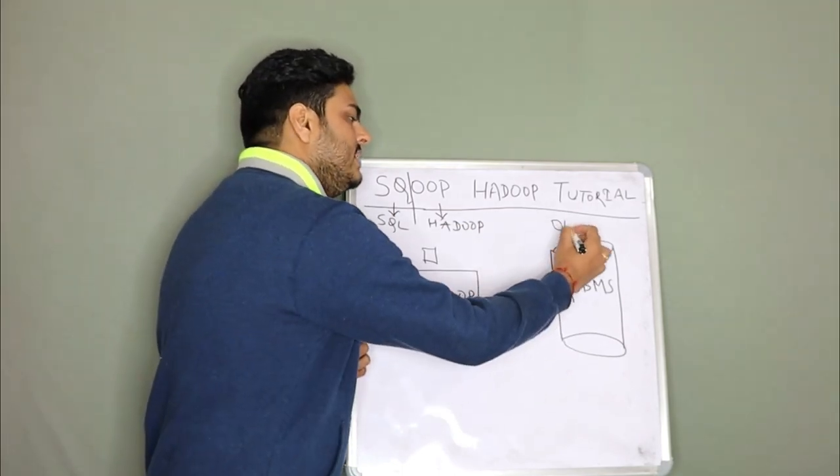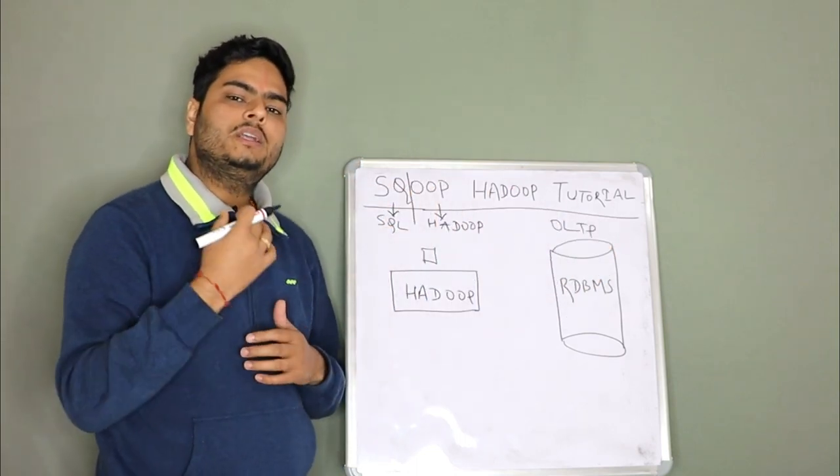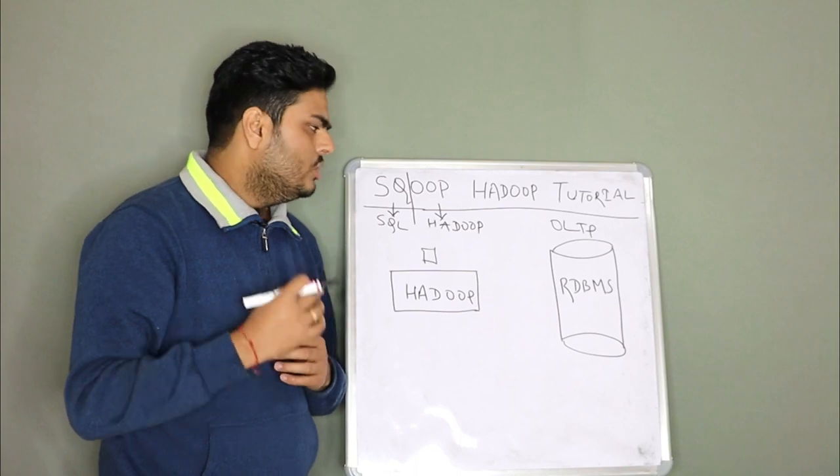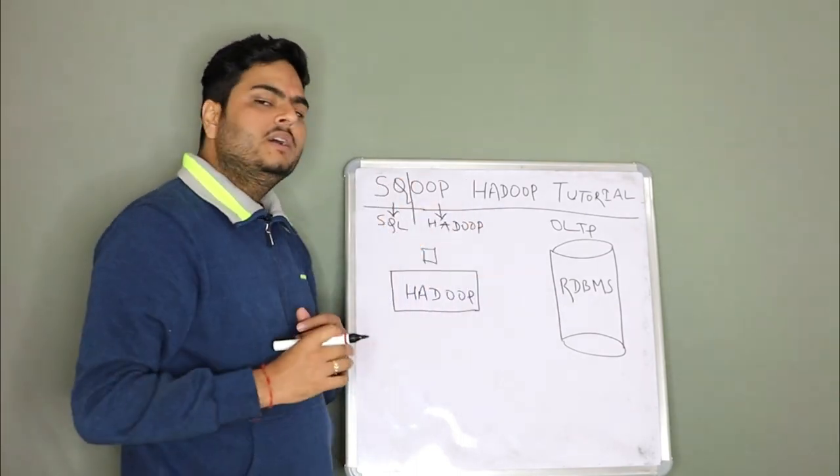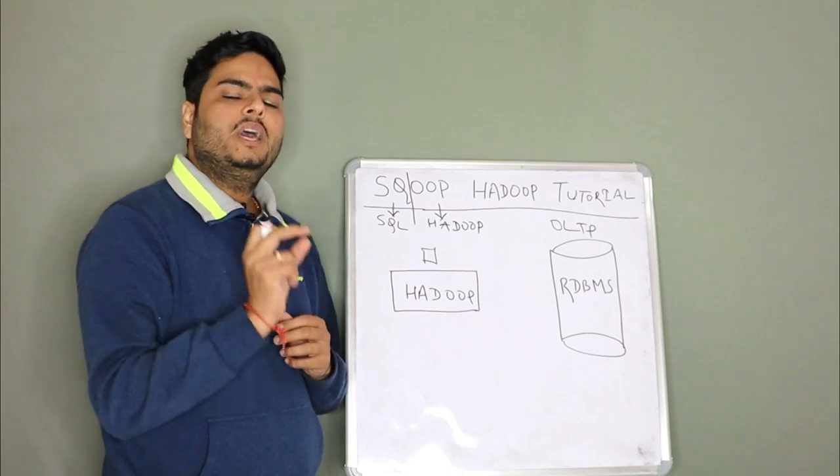Again the same example I will give you. RDBMS are typically an OLTP system. OLTP system means online transaction processing system. What does RDBMS stands for? Relational Database Management System.